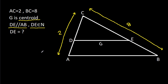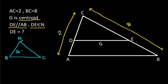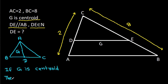In any triangle ABC, if G is the centroid, then it divides the median AD in the ratio 2:1. That means AG to GD is equal to 2:1.